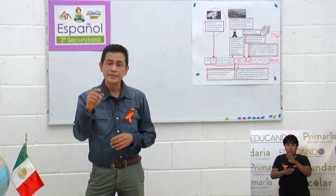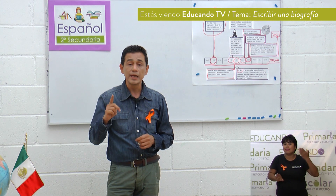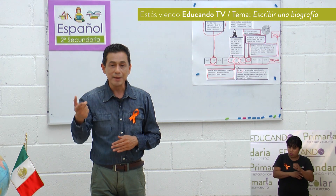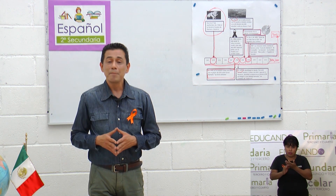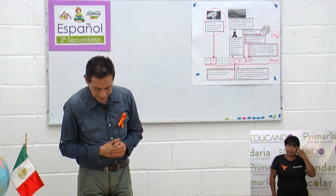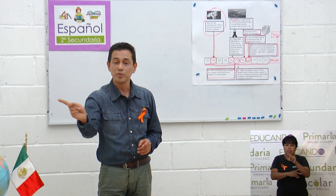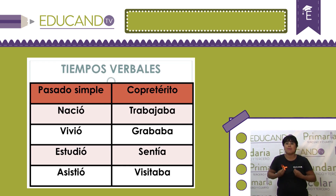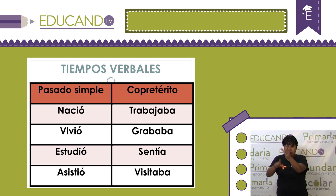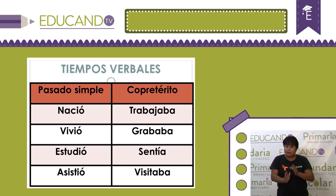Si recuerdan el pasado simple y el copretérito, bien; si no, les traje una imagen para recordar estos tiempos. En esta imagen estamos viendo el pasado simple: nació, vivió, estudió y asistió. Y en la otra columna estamos viendo el copretérito: trabajaba, grababa, sentía y visitaba. Entonces: pasado simple y copretérito.